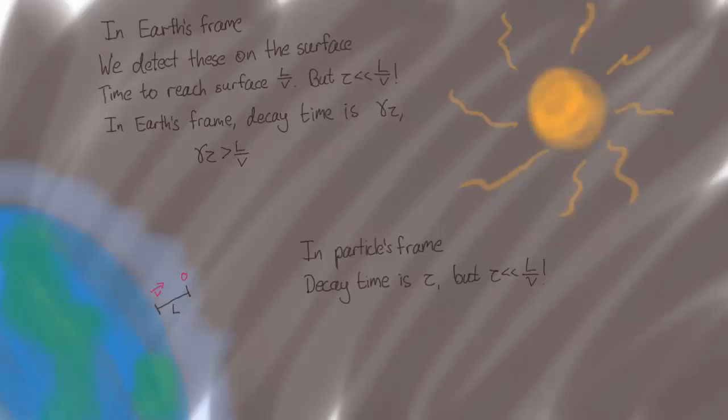So the resolution to this paradox is that in the muon's frame of view, the atmosphere is length-contracted because the atmosphere, like the Earth, is flying towards it at speed V. And so this only has length L over gamma.